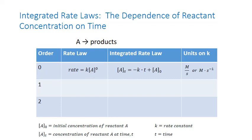Because we have different exponents for the rate law for first and second order reactions, we're also going to have different forms of the integrated rate law for these types of reactions. For a first-order reaction, rate equals the rate constant times the concentration of A raised to the first power. When this is integrated from time zero to a later point in time T, we get the natural log of the concentration of A at time T equals the negative of the rate constant K times the time T, plus the natural log of the initial concentration of A. In this case, the rate constant K has units of one over seconds, or seconds to the negative one.